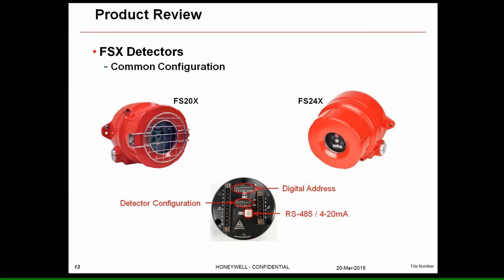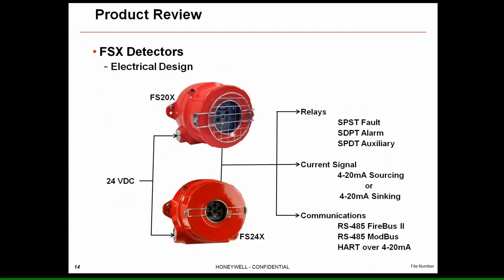The top 10-position DIP switch is used for a digital address — the first three positions are reserved for factory use, and positions four through ten give us a 7-bit digital address providing 128 unique addresses. The middle 8-position DIP switch configures the detector: latching or non-latching relays, normally energized or de-energized, verification time of five or ten seconds, and sensitivity settings — long range, mid-range, or short range. The rotary switch selects the RS-485 protocol mode and whether we source or sink current for the 4–20 mA output.